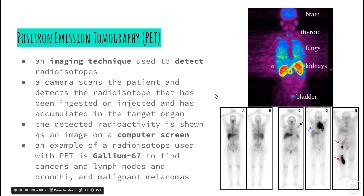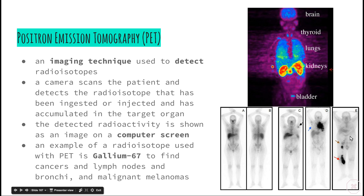The detected radioactivity is shown as an image on a computer screen. An example of a radioisotope used with PET technology is gallium-67, which is used to find cancers in the lymph nodes, the bronchi, and malignant melanomas — skin cancers that can lead to much more serious issues. This is a fairly straightforward procedure: the radioisotope is injected or ingested by the patient, with no invasive surgery required. They simply pass through a scanner, and doctors and surgeons can pinpoint the exact location of affected organs.